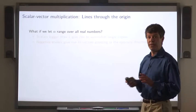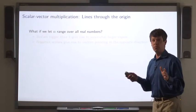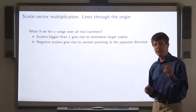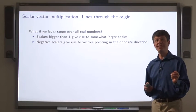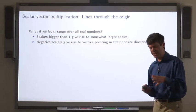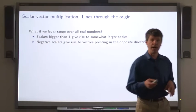What if we let the scalar alpha range over all real numbers rather than just the numbers between 0 and 1? Well, the scalars bigger than 1 will give rise to arrows that are longer than the original vector, and the negative scalars will give rise to arrows in the opposite direction. Let's try it out in Python.